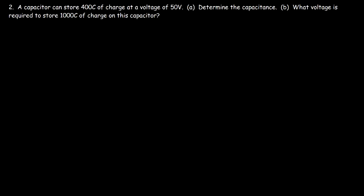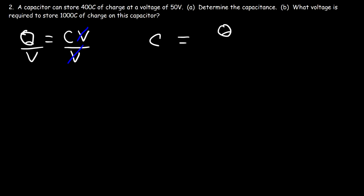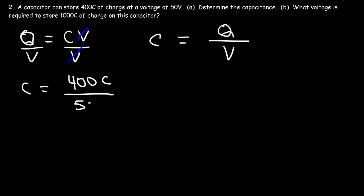Now let's move on to number 2. A capacitor can store 400 coulombs of charge at a voltage of 50 volts. Determine the capacitance. We know that Q equals C times V, so to calculate the capacitance, we divide both sides by V. Capacitance is simply the ratio between the amount of electric charge a capacitor can store per volt. So this capacitor stores 400 coulombs when 50 volts is applied — 400 divided by 50 gives us 8 coulombs per volt. So it's an 8-farad capacitor.